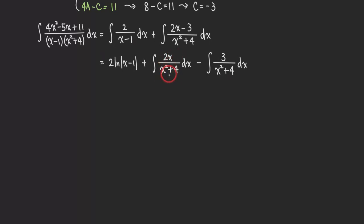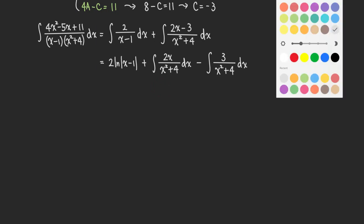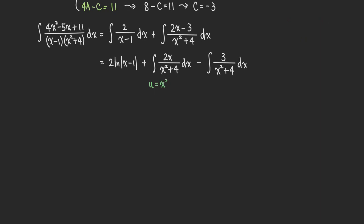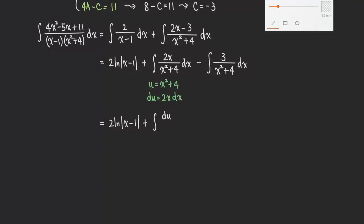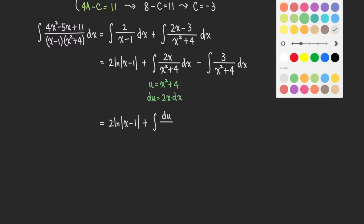This first part requires a simple u-substitution. Let's do a u-sub: we let u equal x squared plus 4, so du equals 2x dx. As you can see, the 2x dx right here can be replaced by du. So continuing with our integral, we get 2 ln of absolute value of x minus 1, plus the integral of du over u.